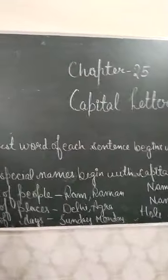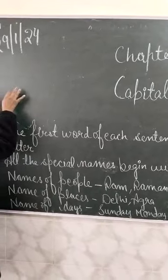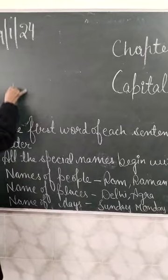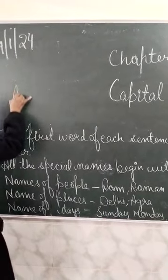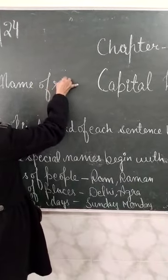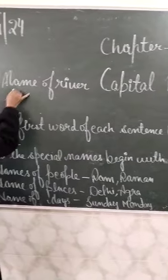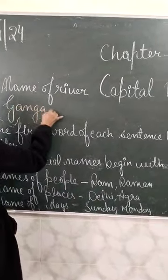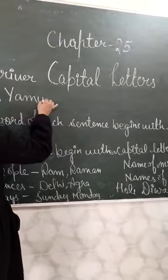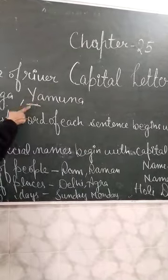If you are going to write any river's name, you have to start with a capital letter. For example, names of rivers like Ganga, Yamuna — you have to start with a capital letter. You can see I have used a capital letter here.